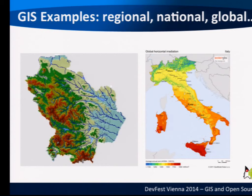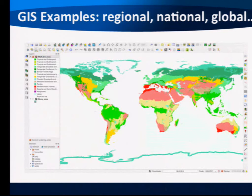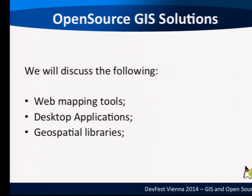MapServer was originally developed with support from NASA. It is written in C++ and runs as a CGI program in a web server. It offers WMS (Web Mapping Service) and WFS (Web Feature Service) — it provides the maps and the features. It is released under an MIT-style license. It is not a complete GIS because you cannot easily edit data and there are no analysis tools. It is useful to publish a map and attached information, but we need something more to work with the data.